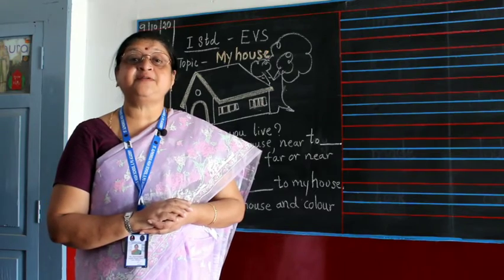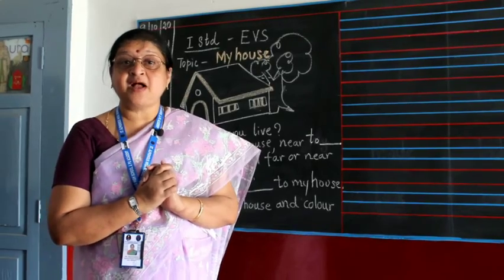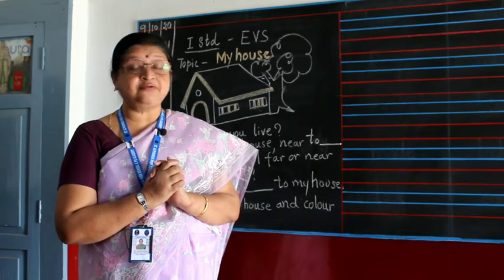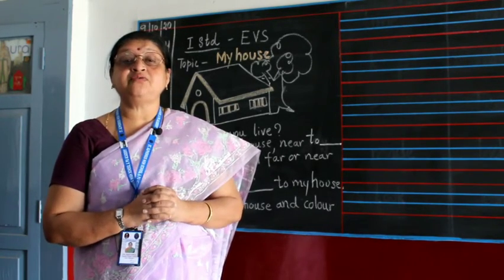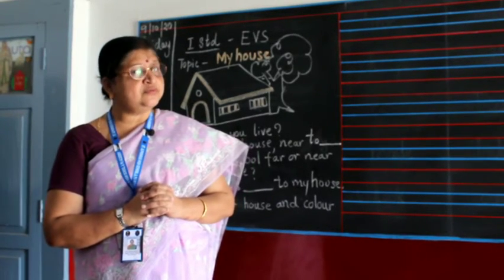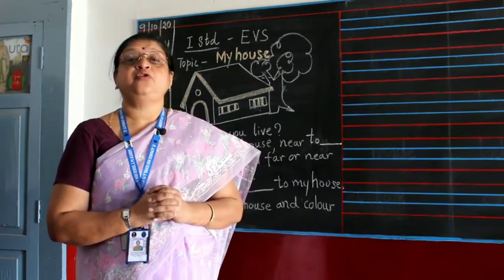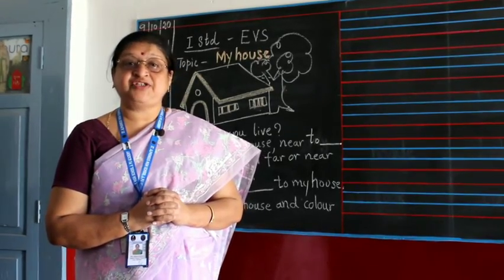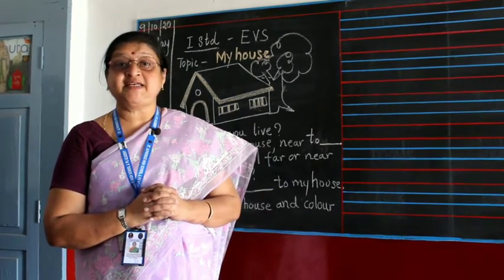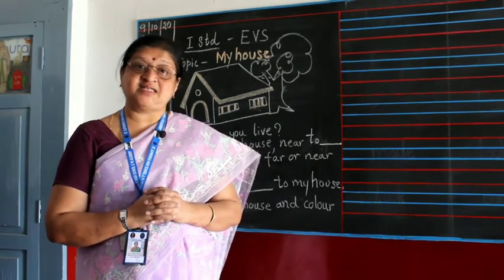Houses have different types of roofs. Some houses have tiled roofs, some have cemented roofs — those houses are very strong. Some village houses have thatched roofs made with dried leaves — coconut leaves or palm leaves. Nowadays they also use tiles.